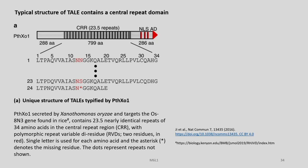Welcome to part B of the lecture on the basics of TAL effectors. Here we will discuss about the structure of TAL effectors first. You can see the typical structure of TAL effectors which contain a central repeat domain, about which we have been speaking in the earlier part.